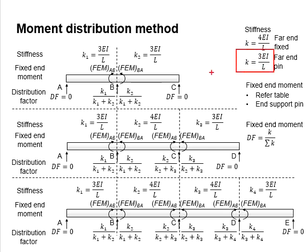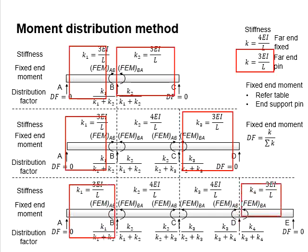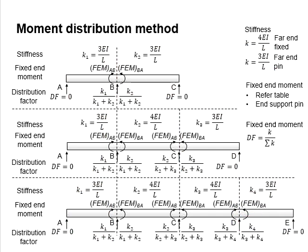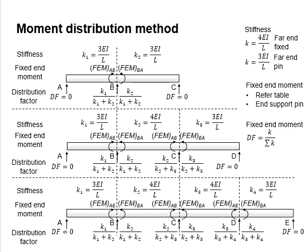The 3EI/L stiffness formula is applied to the end segments adjacent to pin supports. Determining the stiffness of each segment of a continuous beam is very important, because theoretically a higher degree of stiffness will carry a larger portion of the moment acting at the joint. In other words, the moment at the joint is shared between segments based on the weightage of their stiffness.